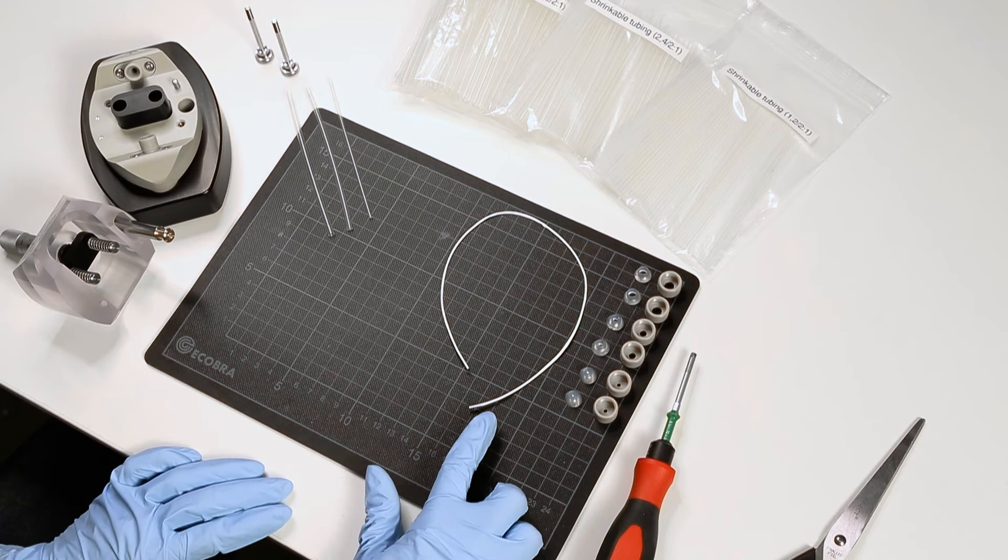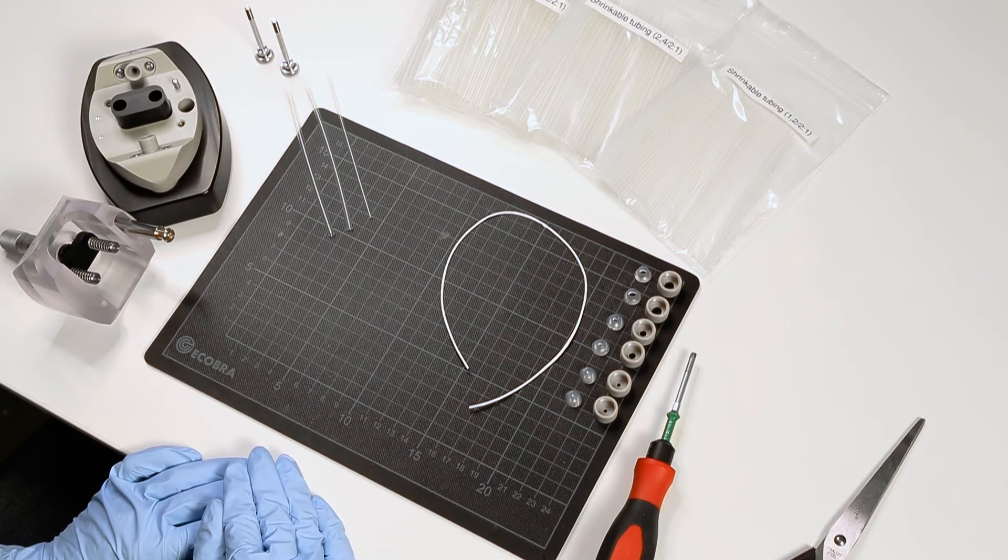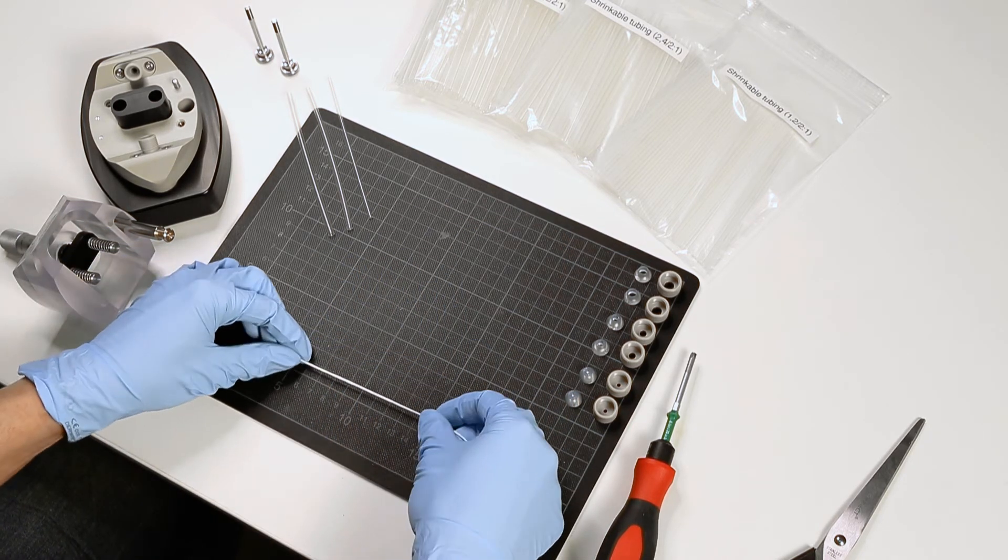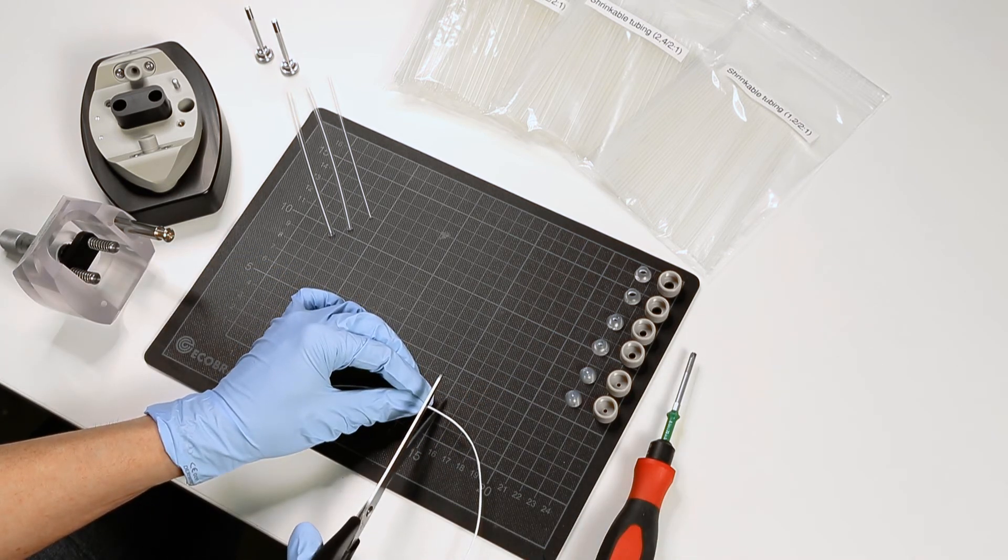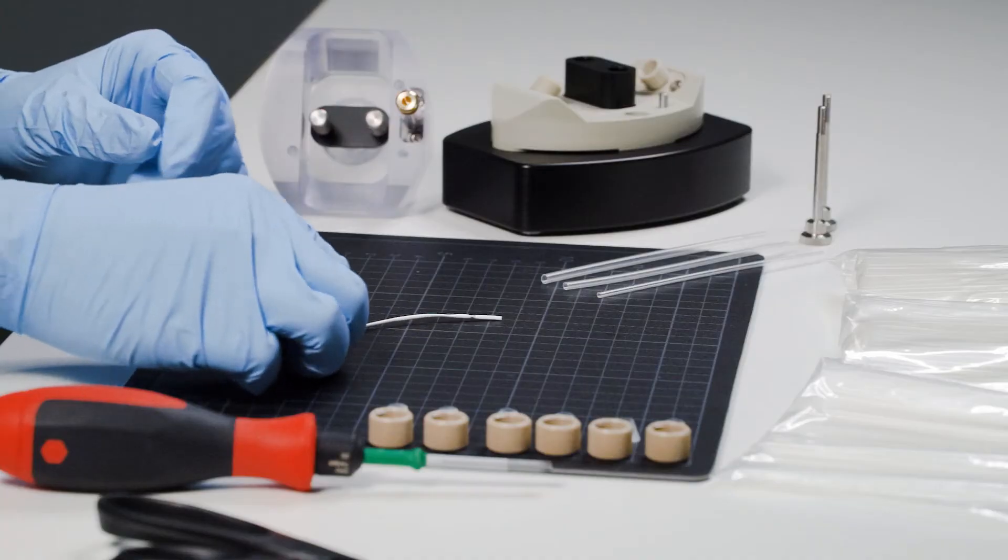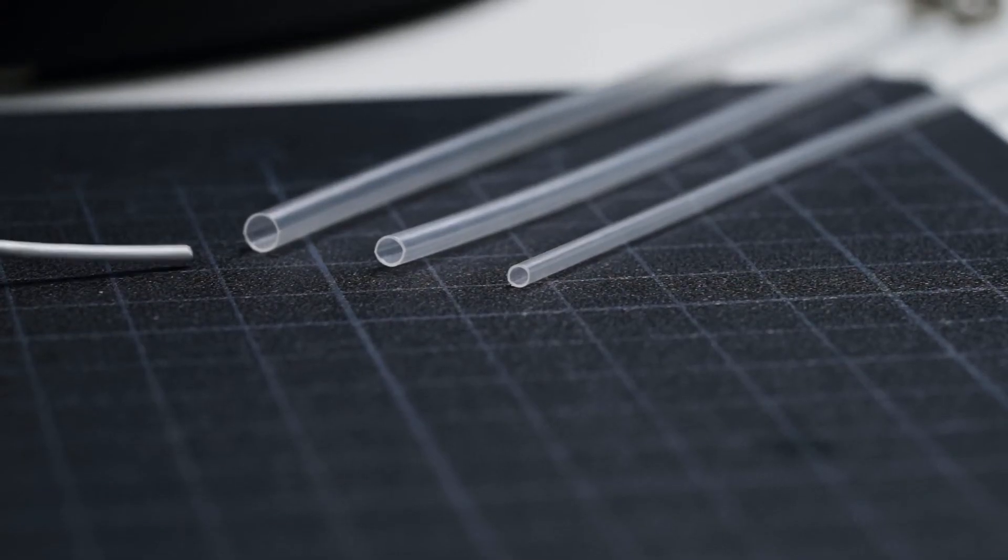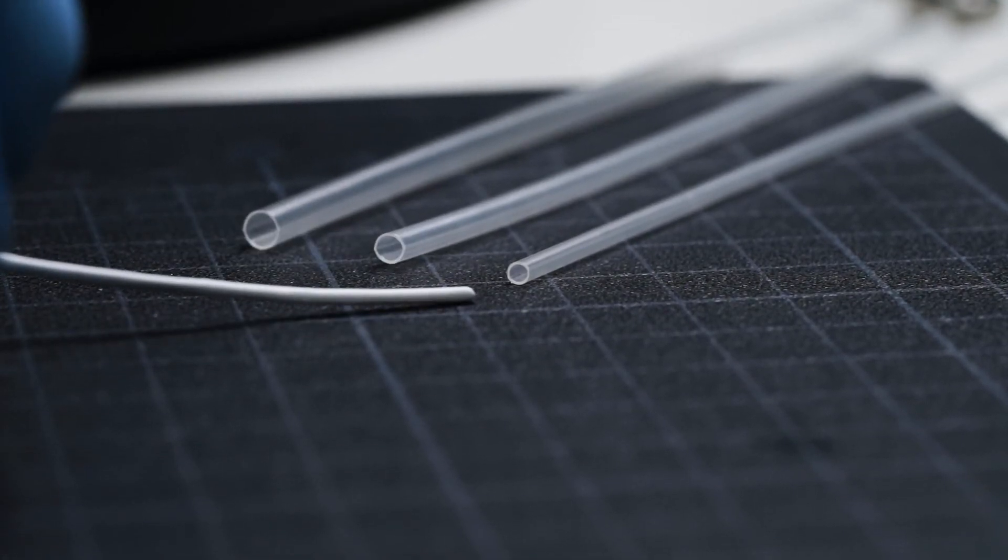For mounting a hollow fiber sample, we follow a similar approach. We disassemble the flexible tubing cell to access the sample compartment. Again, we start with a sample length of minimum 10 cm. Select a heat shrink tube with its inner diameter closest to the outer diameter of the hollow fiber membrane.